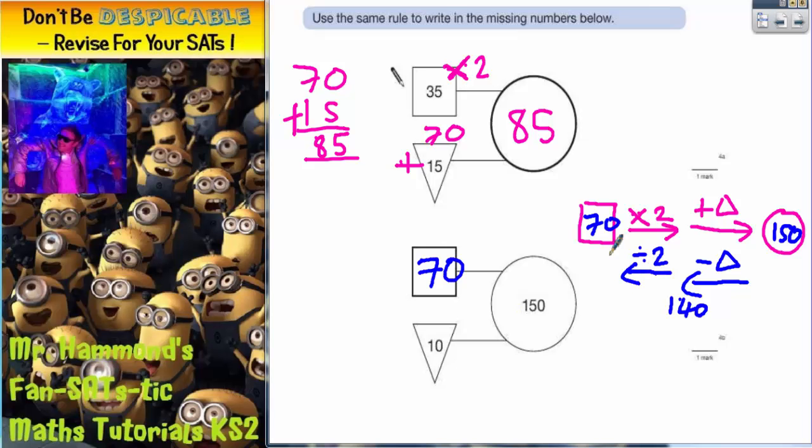Now what we should do is just double check that it works with the rule going in the correct way from the original question. So 70 times 2, double the number in the square, would be 140. And 140, add on your 10, would indeed be 150. So it is right. The number in the square has got to be 70.